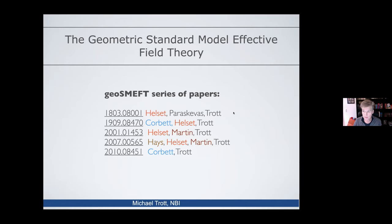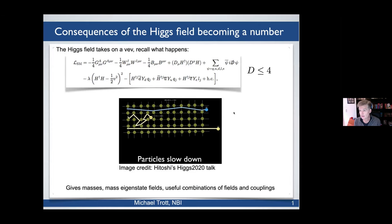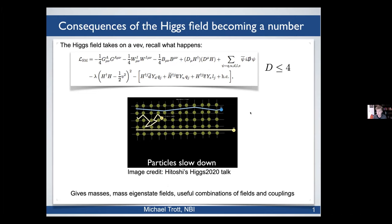We're talking about geometry because of a very simple fact and how that fact projects into the EFT interpretation of data going forward. The fact is that the Higgs field is a bit special: it's a field that becomes a number — it has a vacuum expectation value. When it has a vacuum expectation value there are important consequences for interpreting experimental measurements. We're going to build into the EFT and see how that basic fact — a field becoming a number — affects the EFT interpretation and leads to the geometric approach being very useful and powerful.